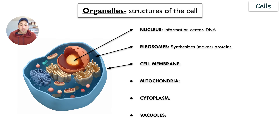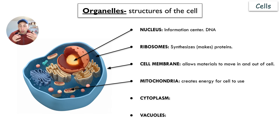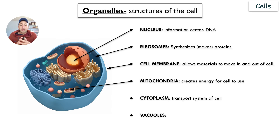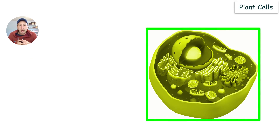The cell membrane surrounds the cell and allows materials to go in and out of the cell — it acts like a bodyguard. The mitochondria is the powerhouse of the cell; it creates energy, or ATP, for the cell to use. The cytoplasm is the jelly-like substance inside the cell where everything is located, acting as the transport system. The vacuoles store extra food and extra waste, like a vacuum.